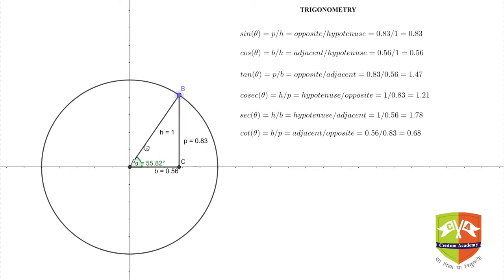If you notice once again, I'm showing only in first quadrant - all the ratios are positive. As the point B moves into the second quadrant, see, cos θ and tan θ have become negative.